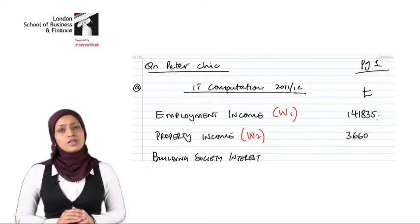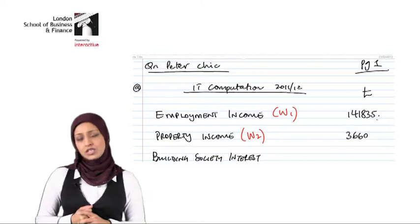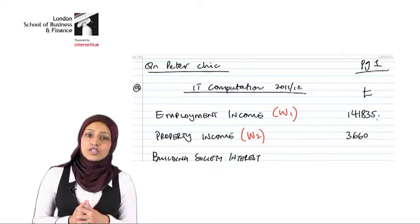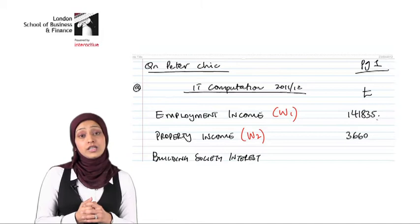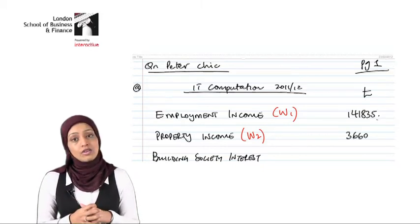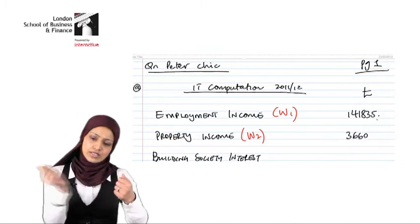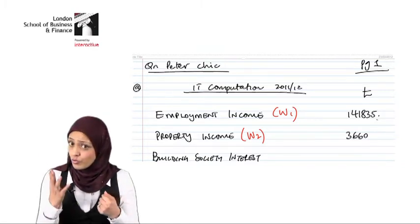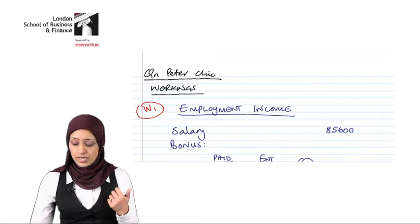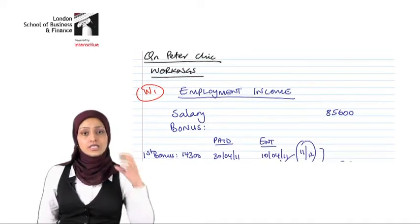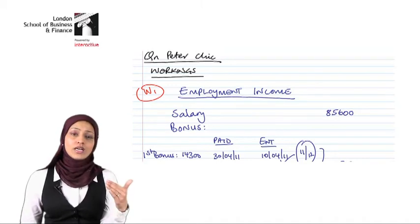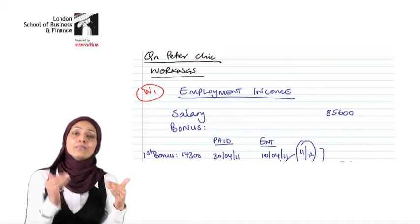Bringing you back to the answer on Peter Sheik, question one of the pilot paper — I set down my income tax computation. I told the marker that I have employment income in this question, and if you want to know where I got the 141,835, go to Working 1. The marker would flip the pages looking for your workings, come to the workings page, and see Working 1 labelled as employment income.